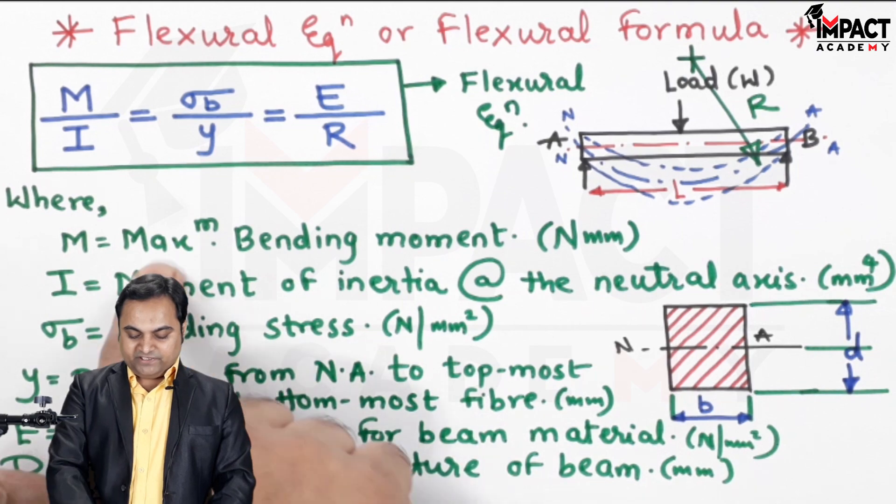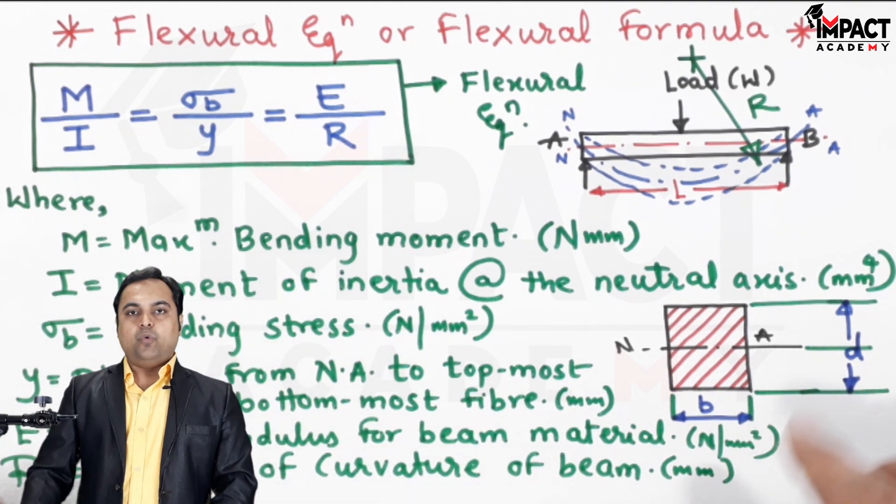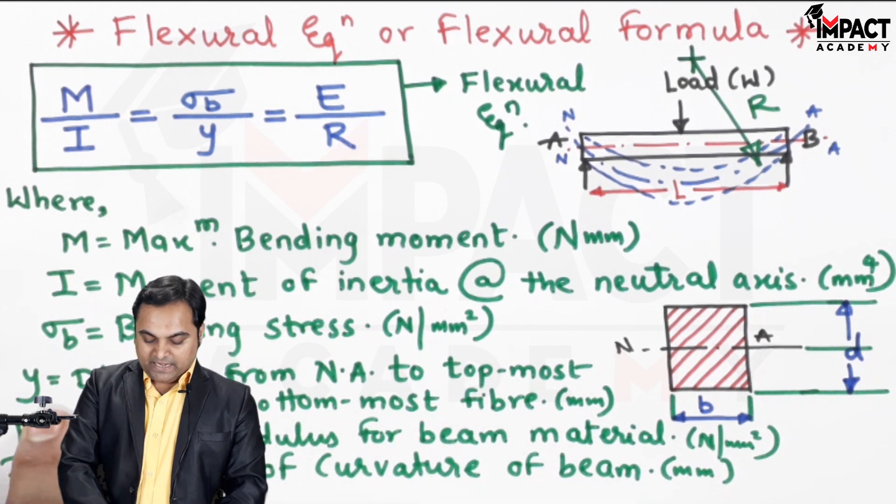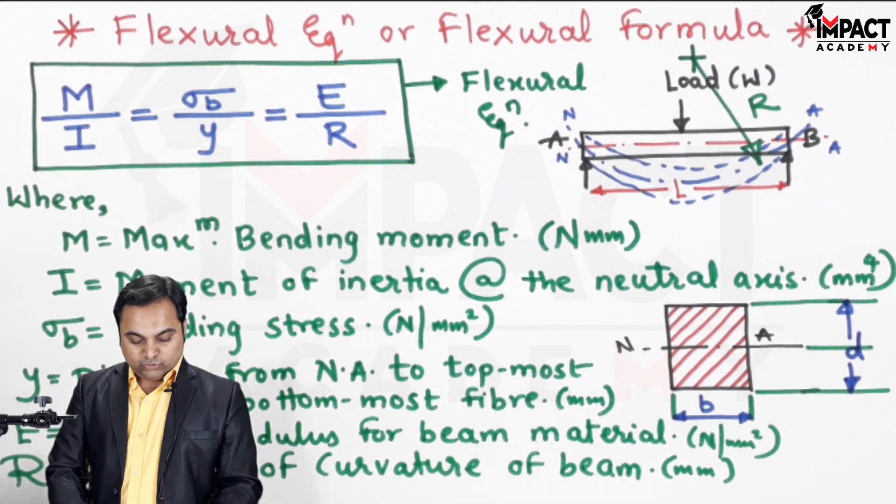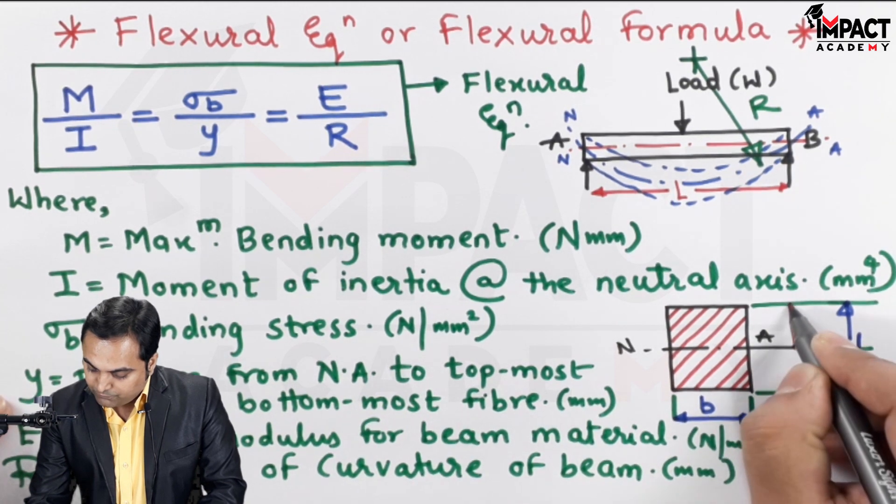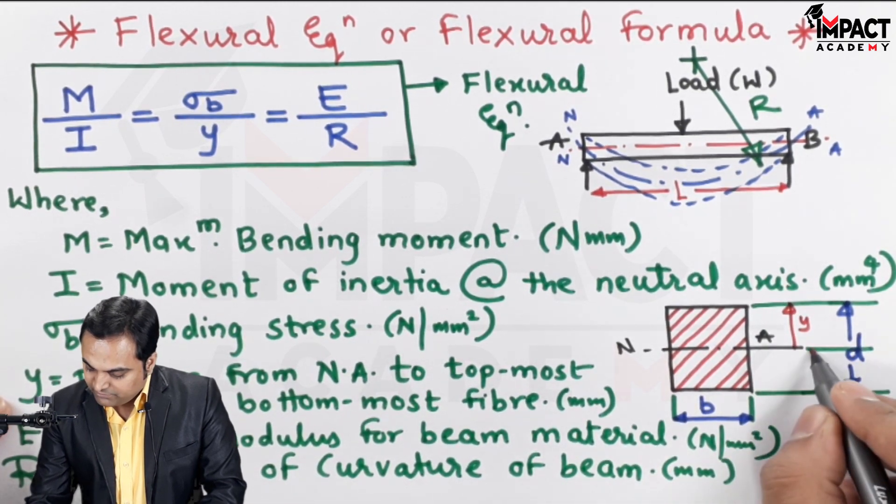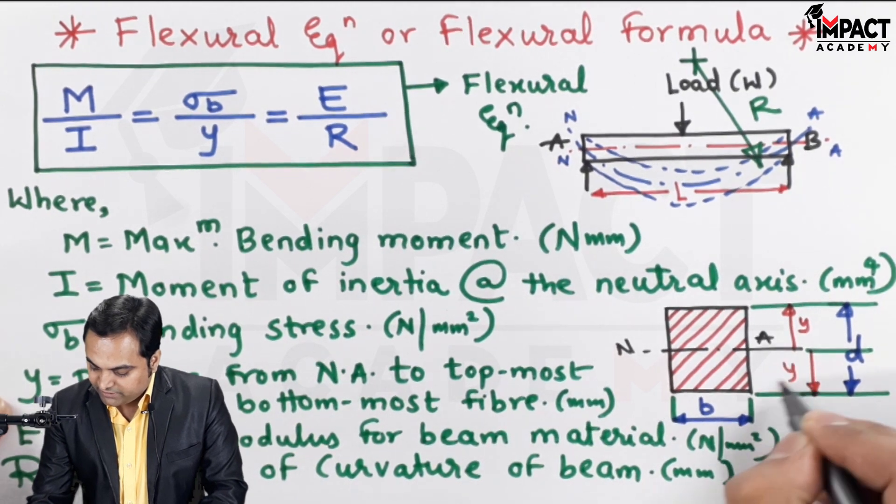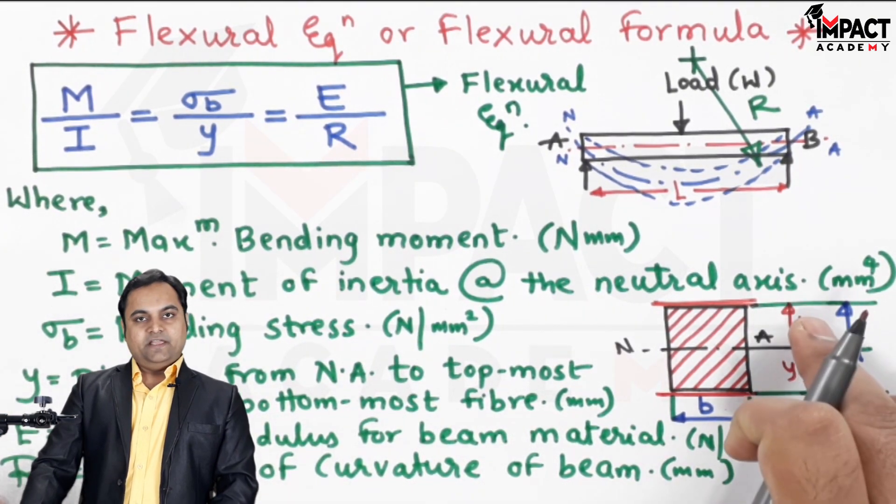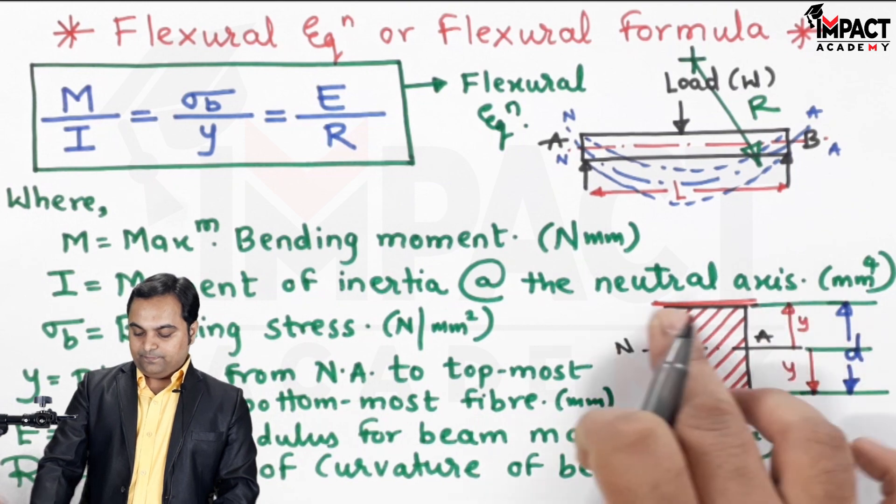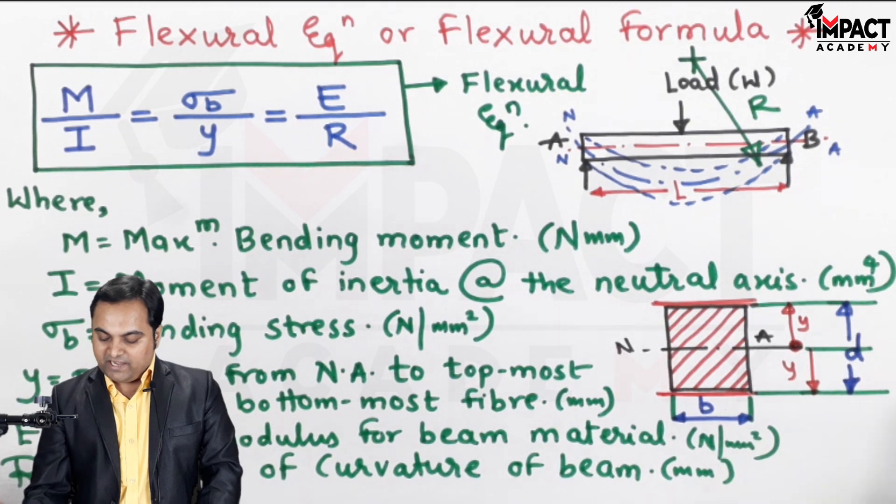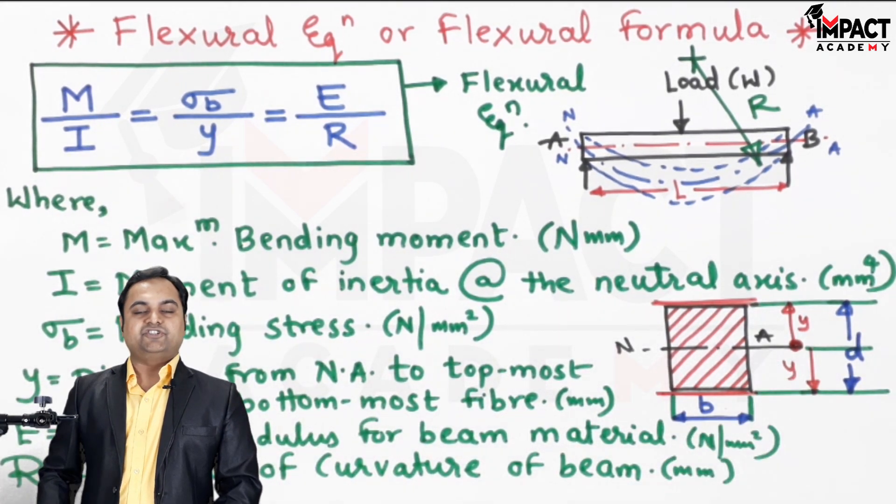σ_b is the bending stress. Taking maximum bending moment and maximum value of y gives us the maximum bending stress in N/mm². Y is the distance from the neutral axis to the topmost or bottommost fiber. Taking the maximum distance y gives us the maximum bending stress at the top and bottom. At the center, the value of y is 0, so the bending stress at the center is 0.